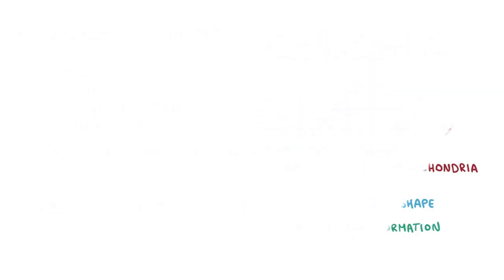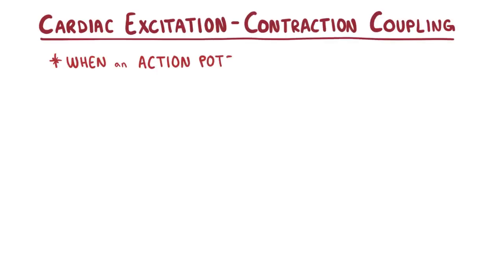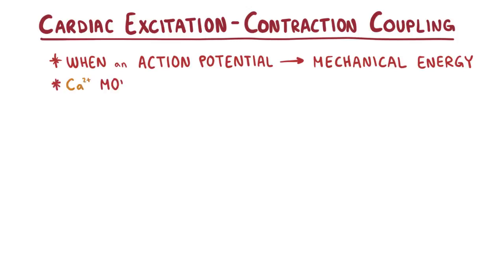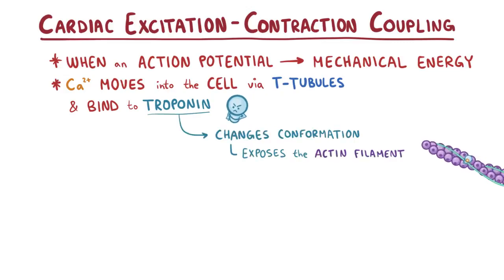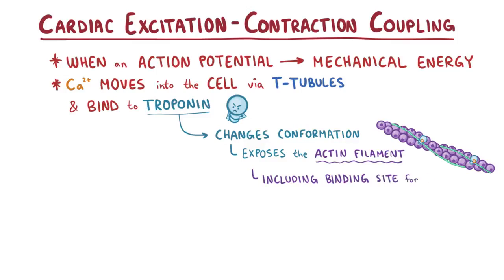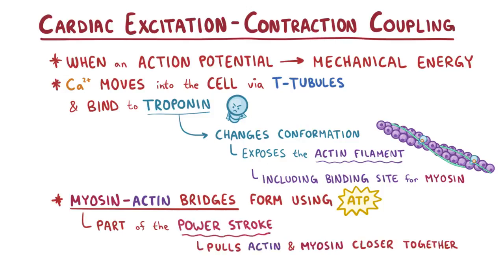As a quick recap: cardiac excitation-contraction coupling is when an action potential is converted into mechanical energy. Calcium ions move into the cell via T-tubules and bind to troponin. The troponin changes conformation and exposes more of the actin filament, which has binding sites for myosin. Myosin-actin bridges form using ATP and are part of the power stroke that pulls actin and myosin close together, forming the basis for muscle contraction.